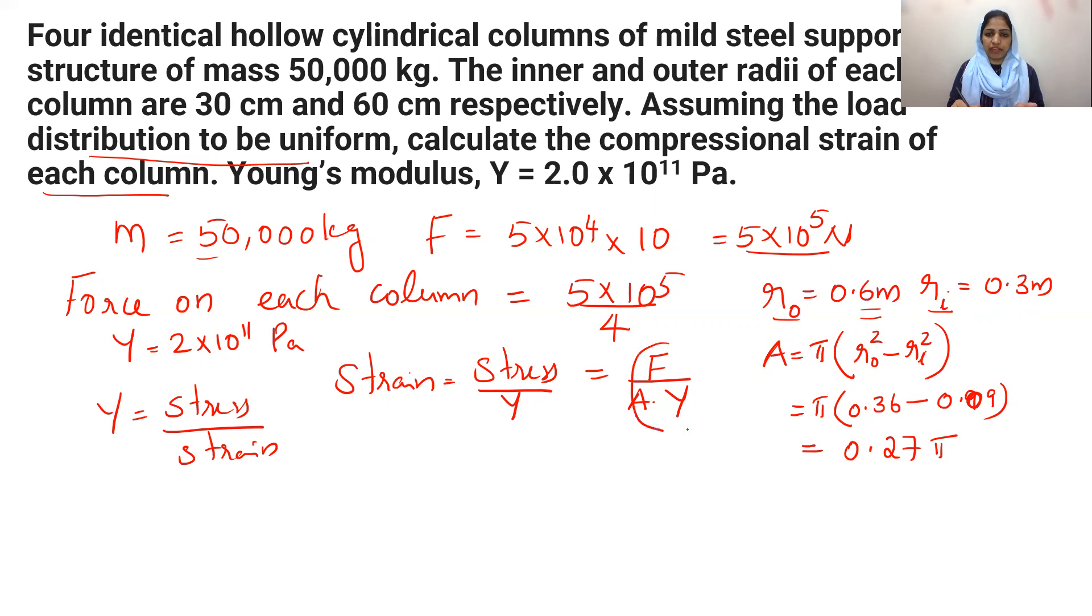So, we have to substitute all values. Strain is equal to force 5 into 10 raised to 5 divided by 4, times area of cross-section 0.27 into 3.14 right? 0.27 into Y which is 2 into 10 raised to 11.